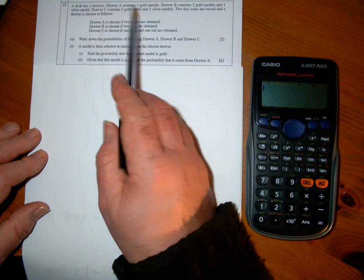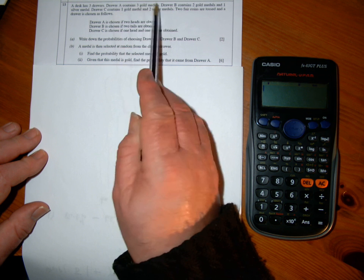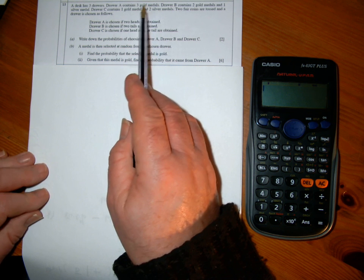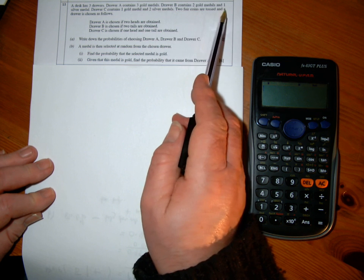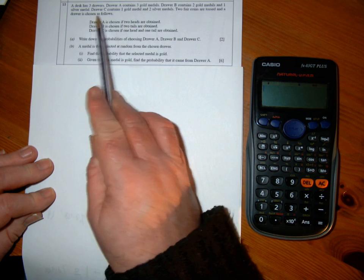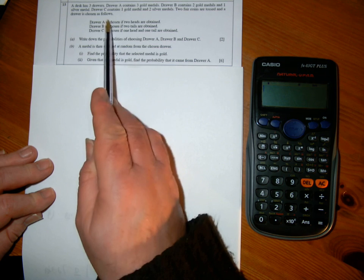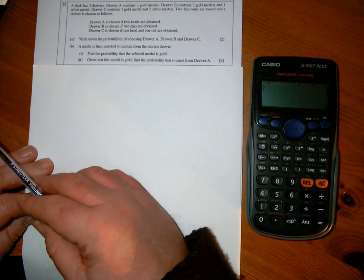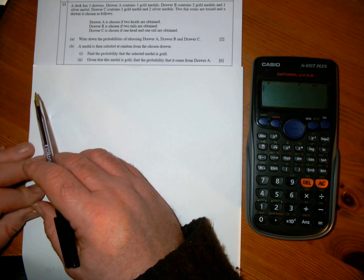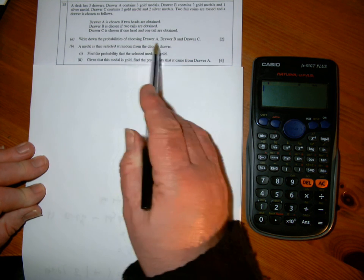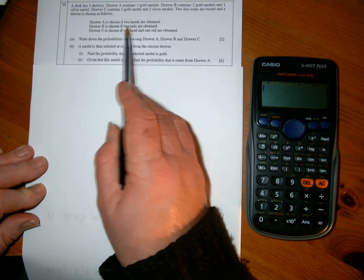Okay, we have three drawers: draw A, B, and C. They contain gold and silver medals. We toss two coins, and depending what comes out from tossing two coins, the decision of which drawer I'm taking comes from that result. Part A is write down the probabilities of choosing A, B, or C. The probability of A, B, and C is a condition of when I get two heads, two tails, or one head and one tail.